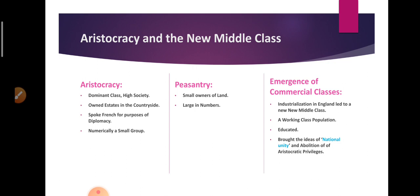Aristocracy people were the dominant class. They owned estates in the countryside and were high society people, but in population they were a small group. Talking about the peasantry, they had a large population. They farmed land as tenants or as small owners, and they were uneducated people.